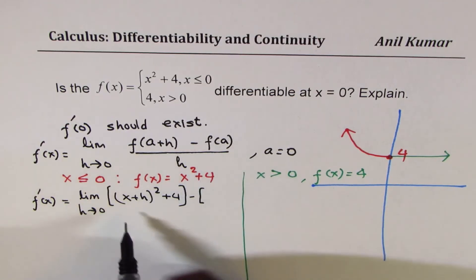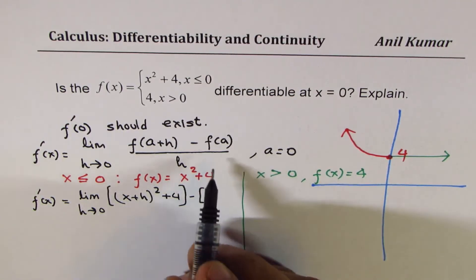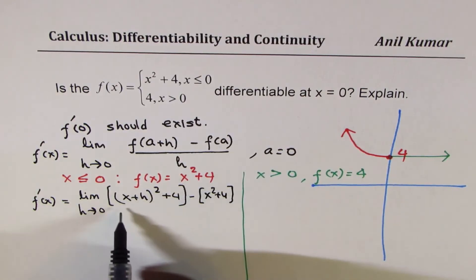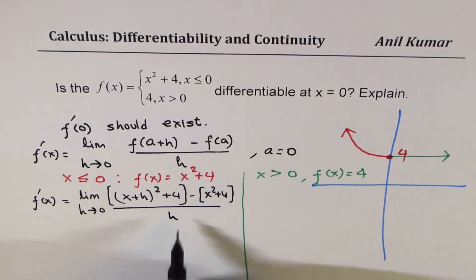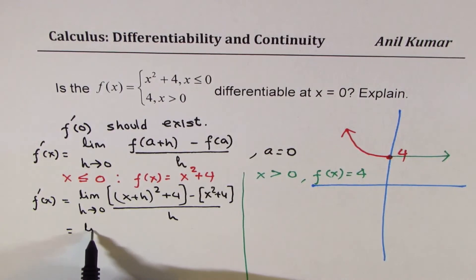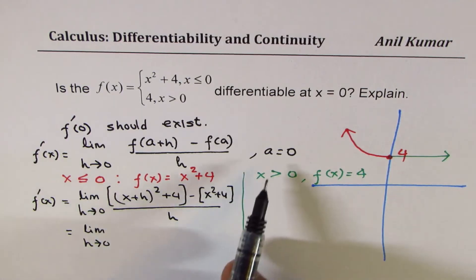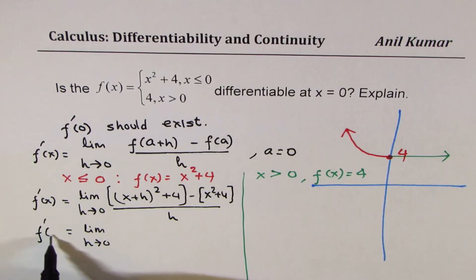Minus f(a), we'll substitute a equals 0 later. It will be x² + 4, divided by h. So that is the general expression. Now, in this expression, I am substituting the value x equals a, which is 0. So if I'm finding at 0, x becomes 0. Is that clear? So if I write 0 here...